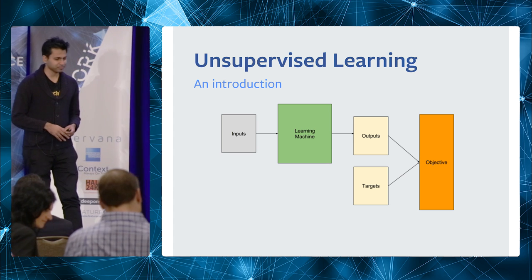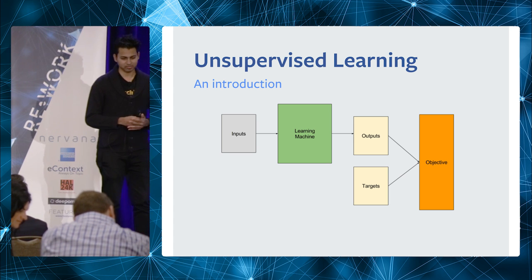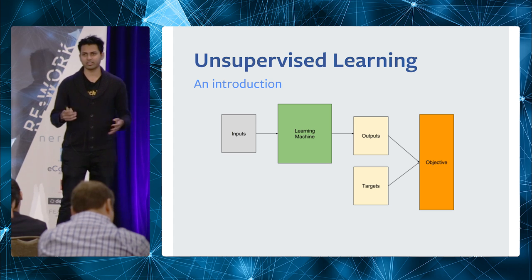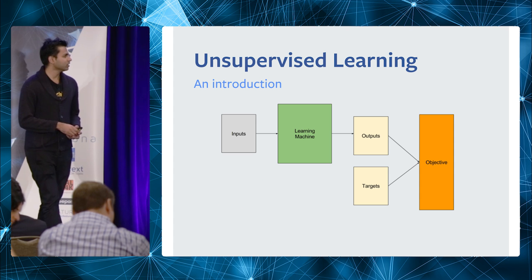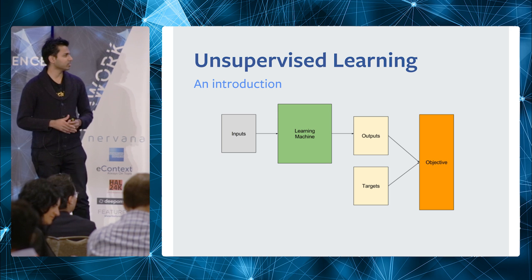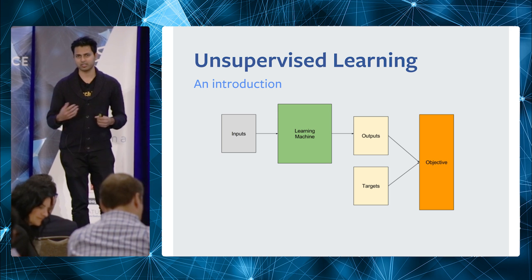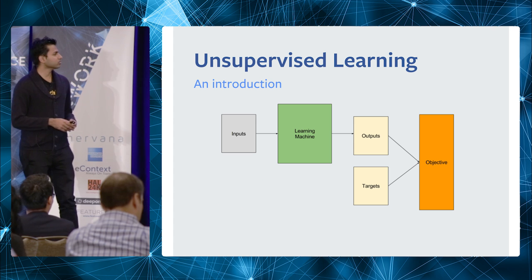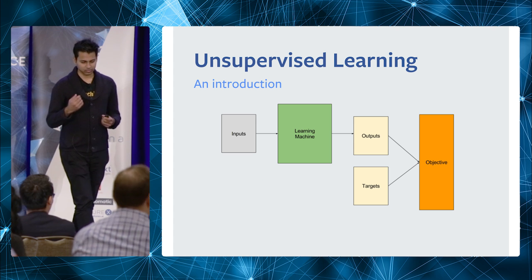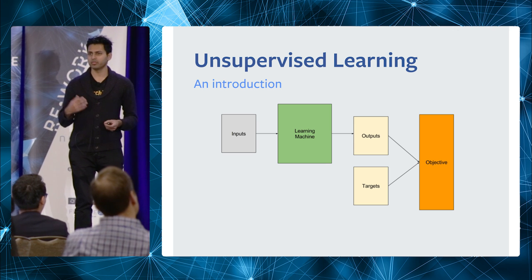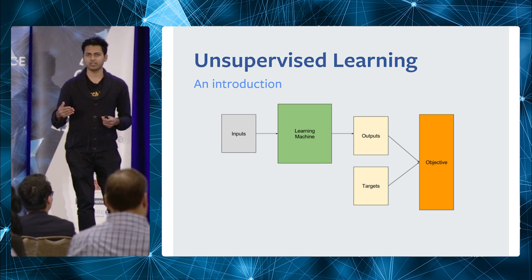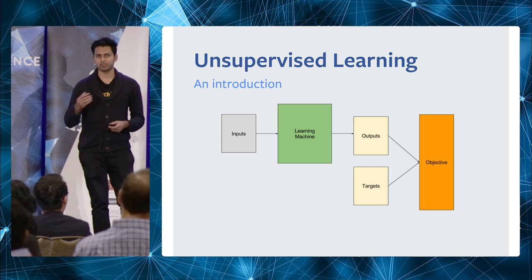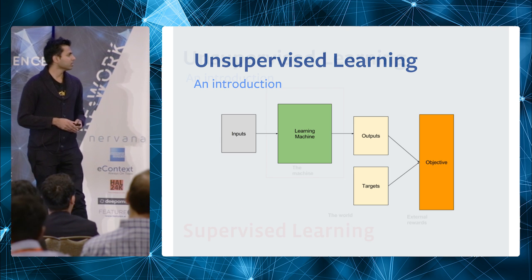So to start off with, let's think of a learning machine in general. It could be you as a person, it could be your dog, it could be an artificial neural network. There's a learning machine with a bunch of inputs and a bunch of outputs. Generally all these learning machines have feedback — they improve themselves over time, correcting what the outputs are supposed to be compared to what they were.